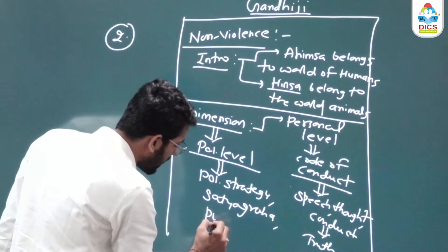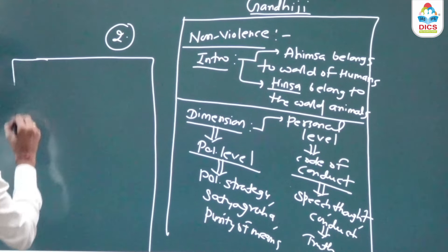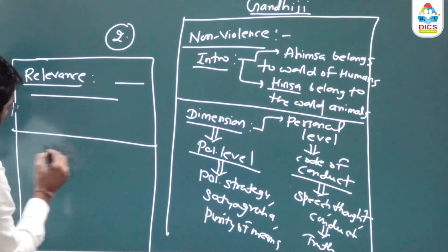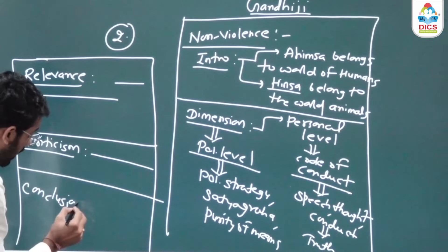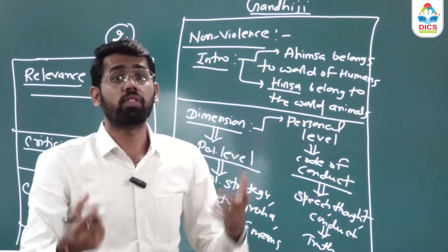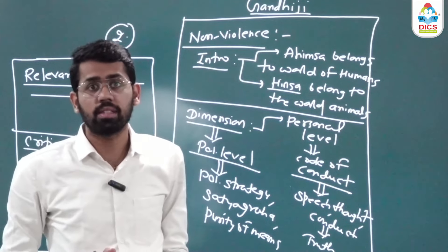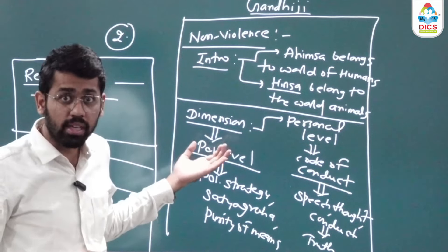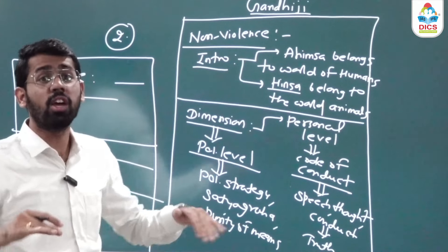This approach applies to all topics — John Locke's social contract, Plato's concepts, and everything else. Make small charts for each. The reason I scored 150 marks is that I summarized one entire optional paper into just 50 pages, which I could revise in two hours anytime. The more revisions you do, the better your marks. Summarize as much as you can — it makes a big difference.